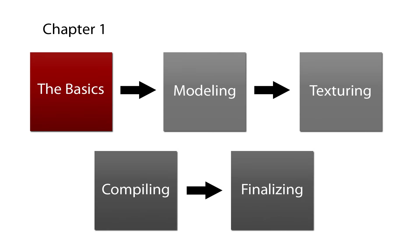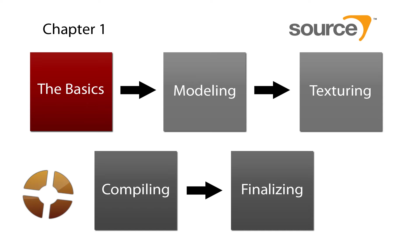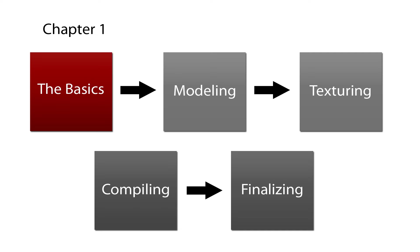Modeling has become increasingly popular since the announcement of the TF2 Contribute site. Modeling is basically creating a 3D rendered object, which is then textured and shaded to make it look like a real item. For the Source engine, and in particular Team Fortress 2, modeling can also be used for other purposes such as creating static models for use in making maps — for example, if you want a tree in your map.